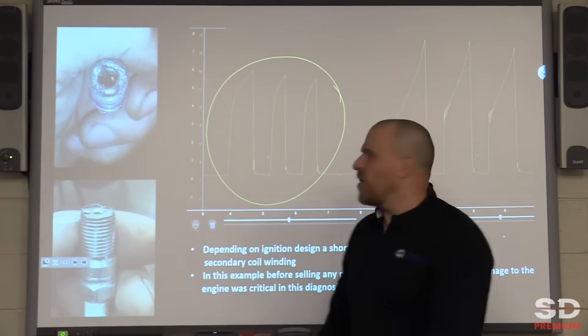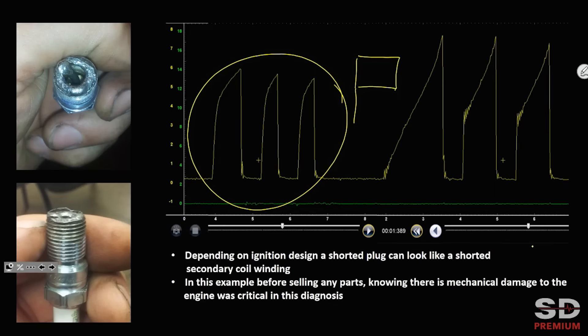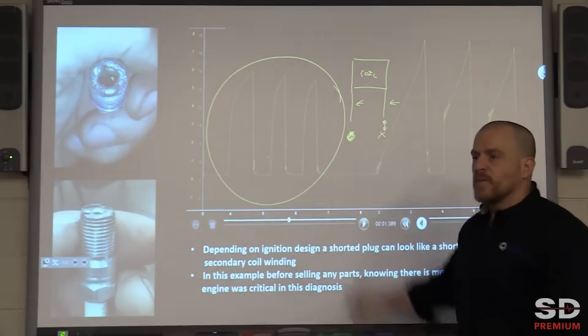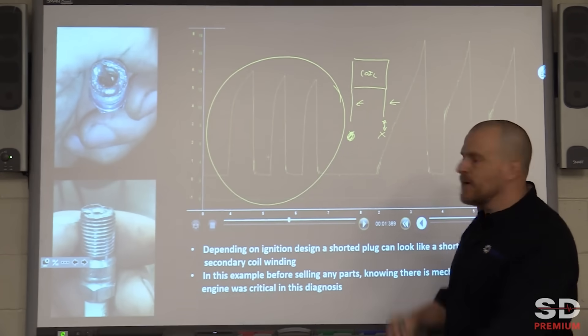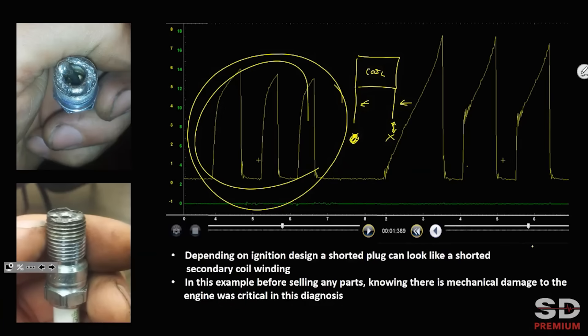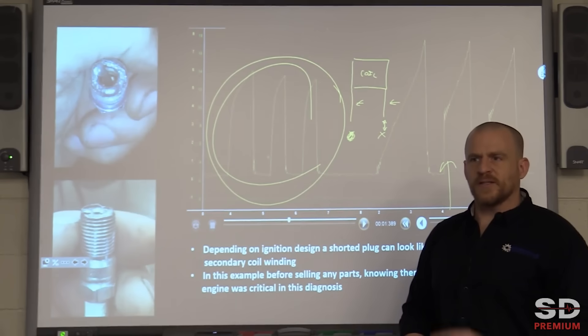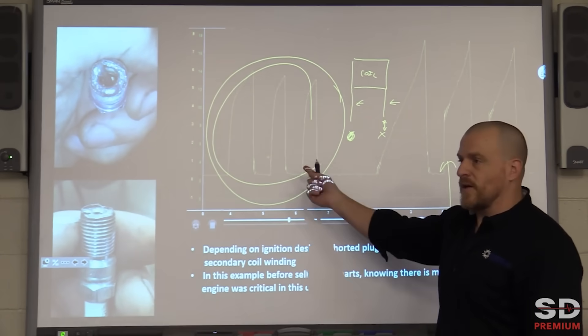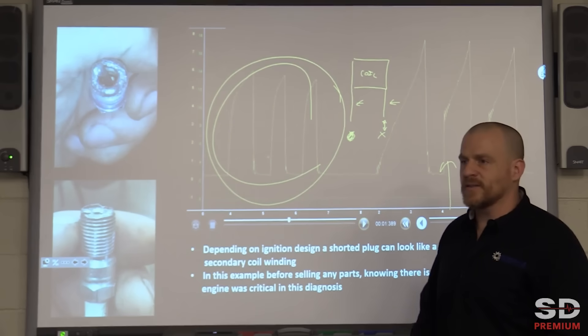A shorted spark plug can look the same thing as a shorted secondary winding in the ignition coil, so can a shorted plug wire. Now are there variables to that? Yes, because if it is a waste spark system with two plug wires and two spark plugs - here's a wire, here's a wire, here's my coil, here's a plug and a plug - if this plug is smashed, does this one still have an air gap? Remember it's a continuous loop, so a smashed spark plug on one of these would not look like this. We would still have a normal looking ramp because the other plug has a gap preventing that energy from being dumped off.